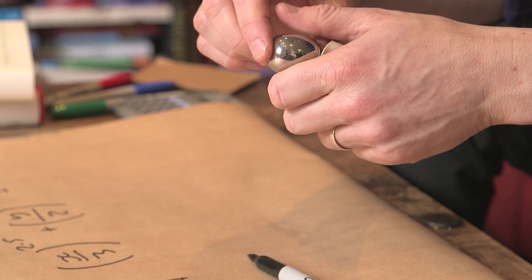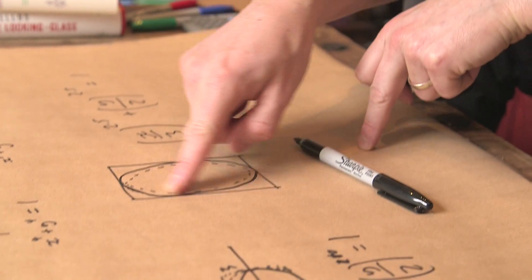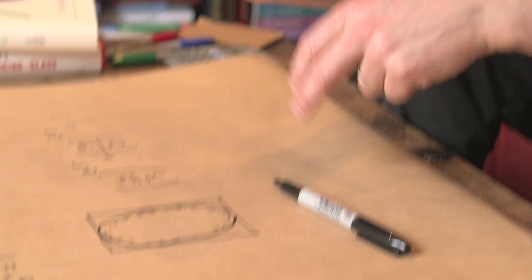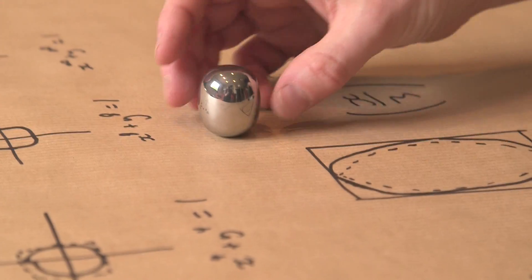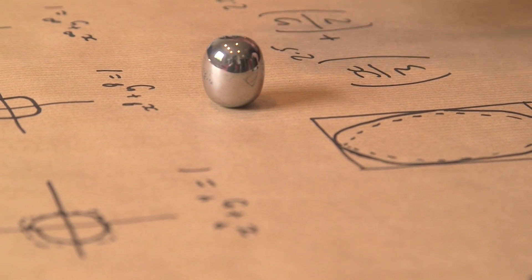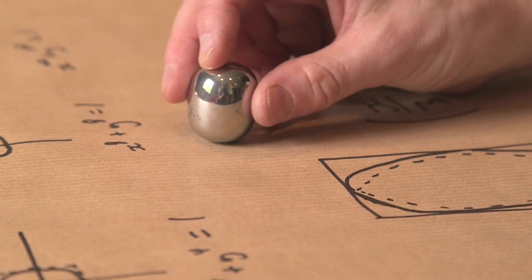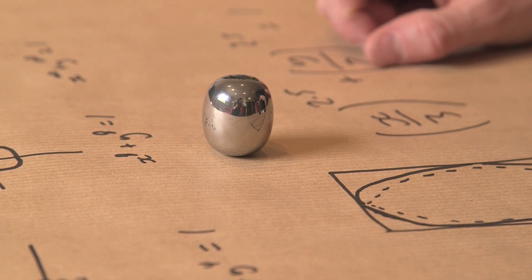And what Piet Hein discovered was that if he was going to make his super ellipse three-dimensional, it looked like this. And actually it was an ellipse, because obviously an ellipse would just fall over. It's got a peak. The super ellipse actually stands.